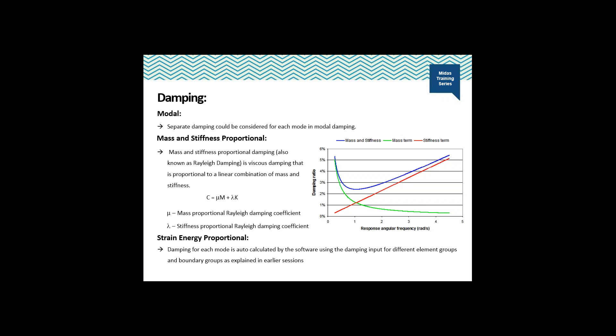Here, mu and lambda are the mass and stiffness proportional Rayleigh damping coefficients. In the image on the right, the red line is stiffness proportional damping, the green line is mass proportional damping, and the blue line is the summation of both. Additionally, there is energy proportional damping, where damping for each mode is auto-calculated by the software using damping inputs for different element groups and boundary groups. This is useful when different materials are used in the model and damping needs to be auto-calculated.